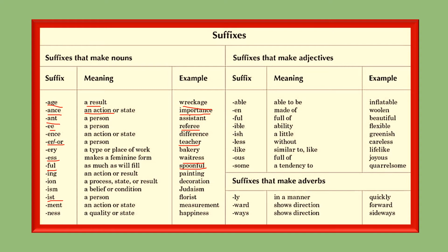Next we come to suffixes that make adjectives. These suffixes include '-able', '-en', '-ful', and '-ible'. So 'able to be' gives 'inflatable', '-en' gives 'woollen', and '-ful' gives 'beautiful'. These are all describing words made by adding suffixes.